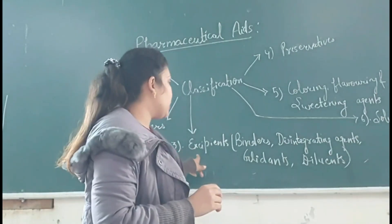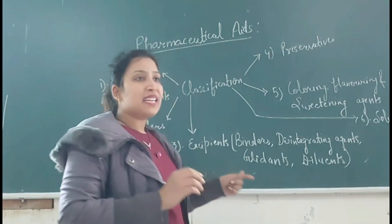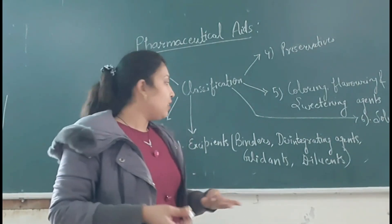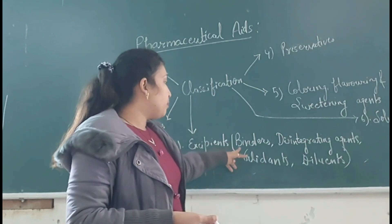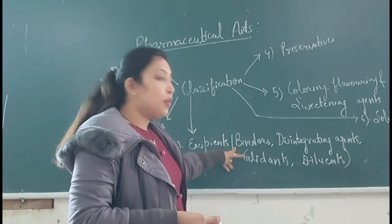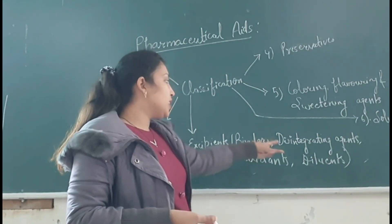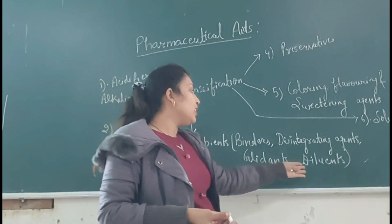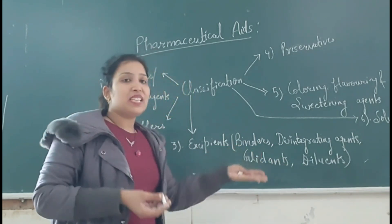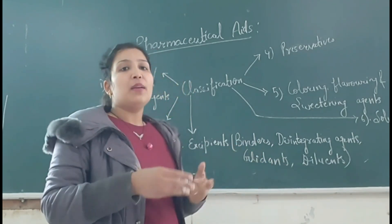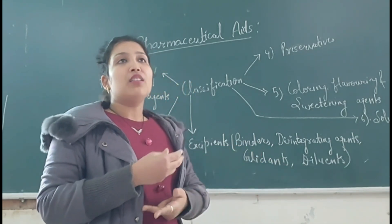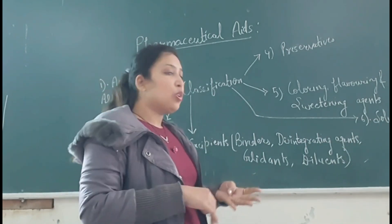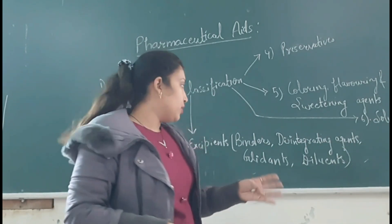The third type of classification is excipients. Excipients are added to make the product stable. Examples of excipients include preservatives, disintegrating agents, and diluents. Diluents increase the bulk of the formulation.